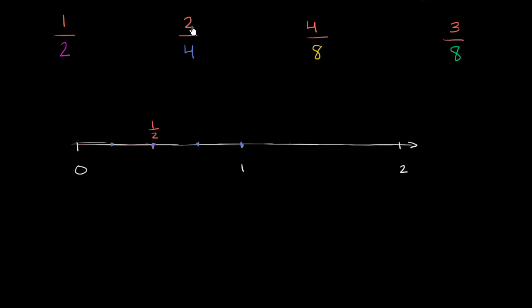So what happens? Where do we end up if we go two out of those four equal sections? Well, we would end up 1. So we go 1, 2 equal sections. So we end up right over here, 2 fourths. We end up at the exact same place. So at least based on how we've drawn out the number line, it looks like 1 half is equal to 2 fourths. So let me write that down, 1 half is equal to 2 fourths.